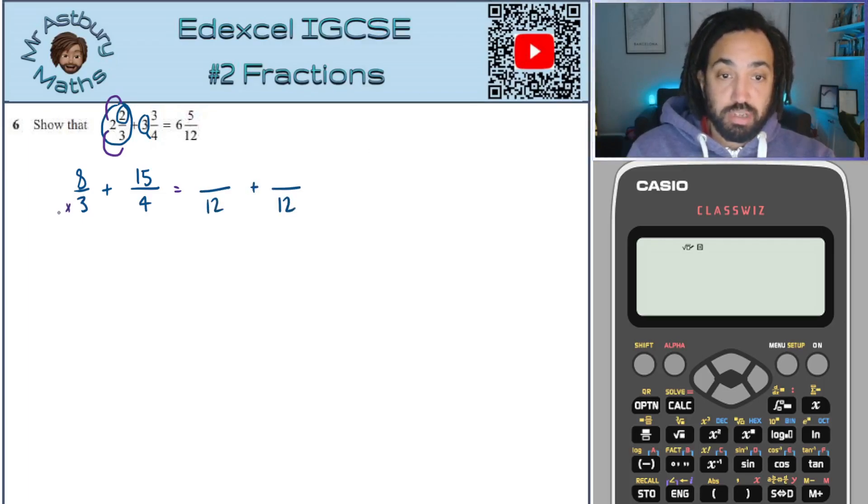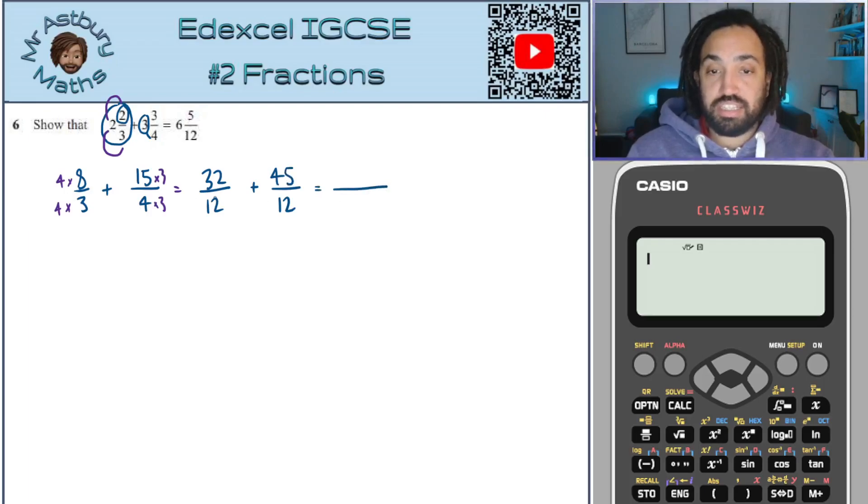So I need to convert these into fractions out of 12. So for the first one, I need to multiply the bottom by four to make 12. So I do the same to the top as well. And for the second one, I need to times the bottom by three. So I need to do the same to the top as well. Okay, four times eight is 32 and three times 15 is 45. And then to add two fractions, if the denominator are the same, we keep it the same and we just add the numerators.